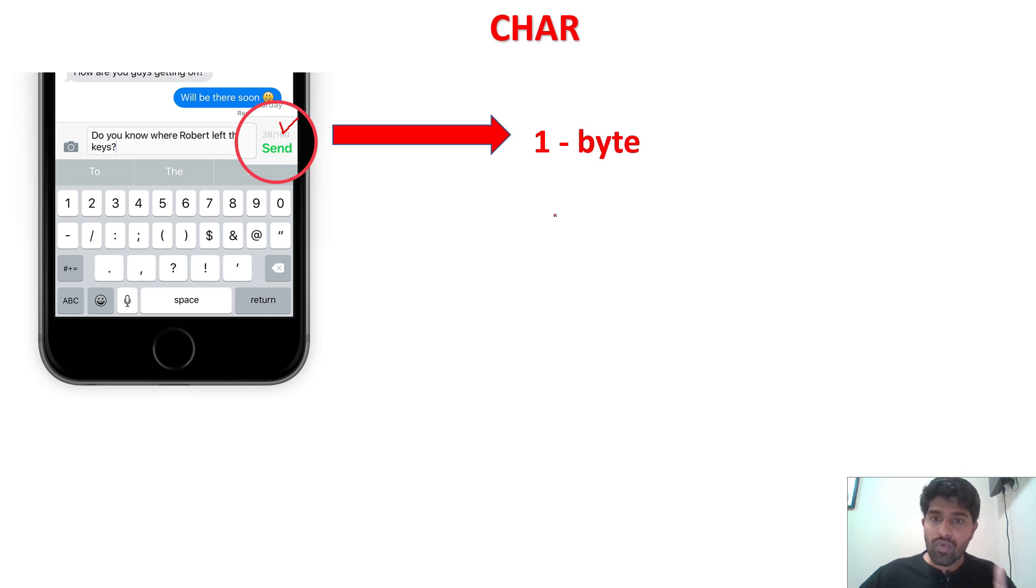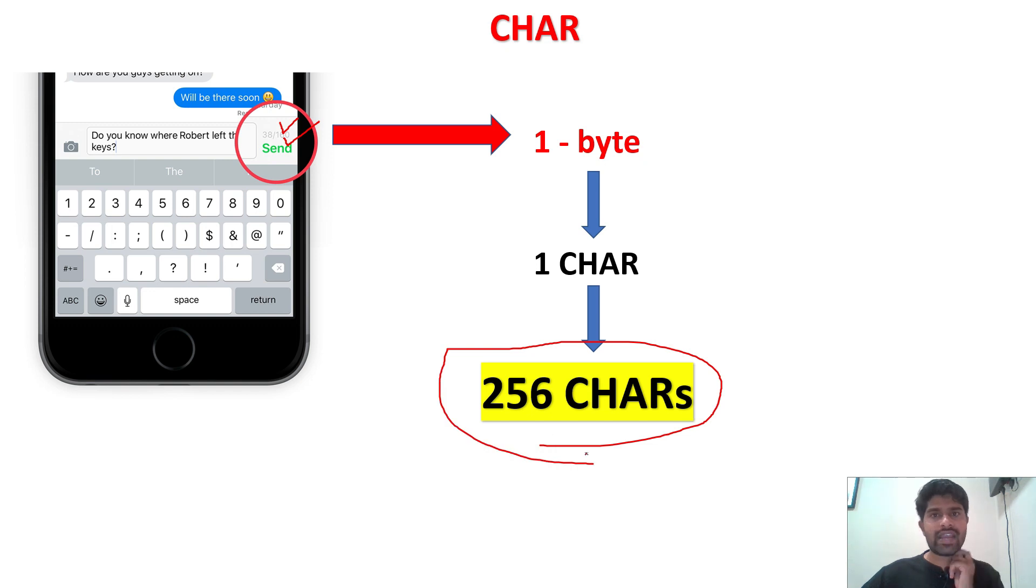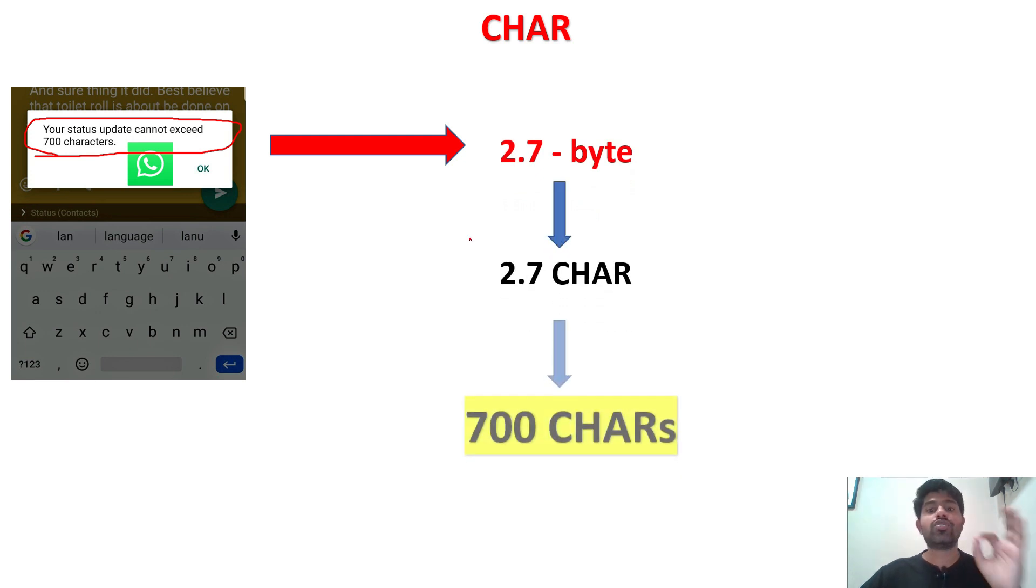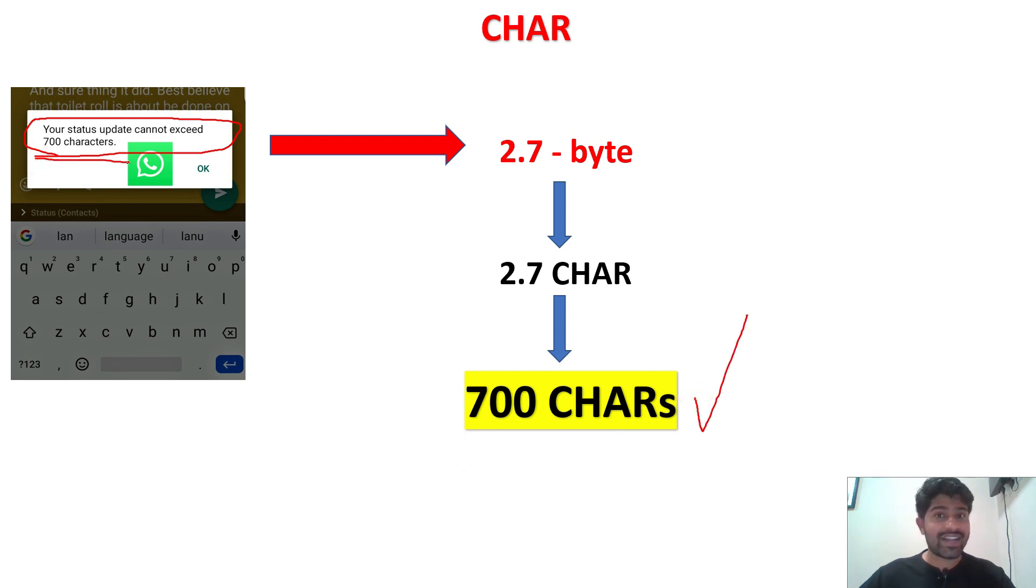So, it means that for one byte, you have the one character. So, here maximum they have configured for 160 characters. But it is up to 256 characters you can take there. And the WhatsApp status also, if you see here, it will allow maximum 700 characters only you can insert. Now, it is very easy. Right. In the daily life also, you are using this data character.